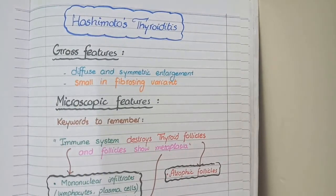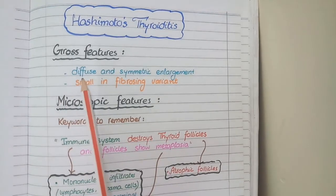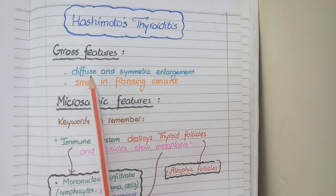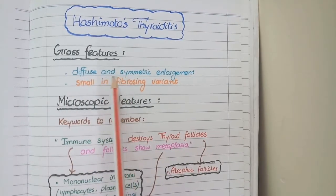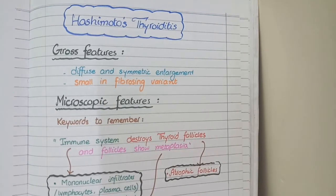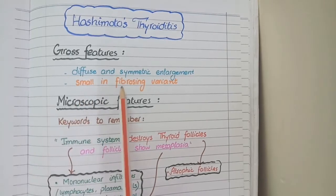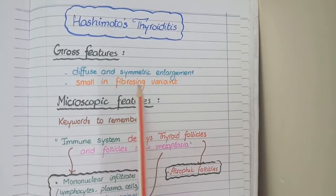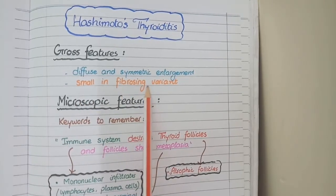On gross model, you will see that enlargement of thyroid in Hashimoto's thyroiditis is diffuse and symmetric. But in some cases, the damaged and inflamed thyroid has so much fibrosis that it appears shrunken. Such a specimen is referred to as the fibrosing variant of Hashimoto's thyroiditis.